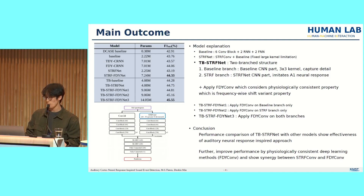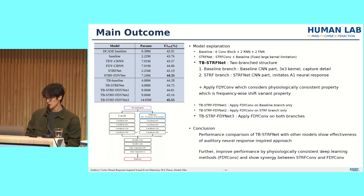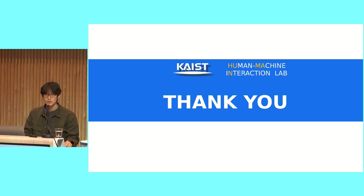We further apply frequency dynamic convolution, which considers physiologically consistent, frequency-wise shift-variance properties. In conclusion, we show the effectiveness of the auditory neural response inspired method through performance increases in TB-STRF-Net, and further improve performance through physiologically consistent learning with FDY convolution, showing synergy between the two approaches. Thank you for listening.